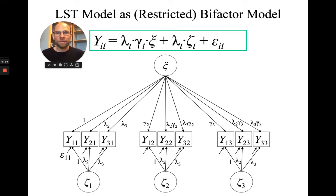We still have three time points and three measures at each time point. Now there are no more tau factors — instead the observed variables load directly onto the common trait factor and onto the state residual factor.